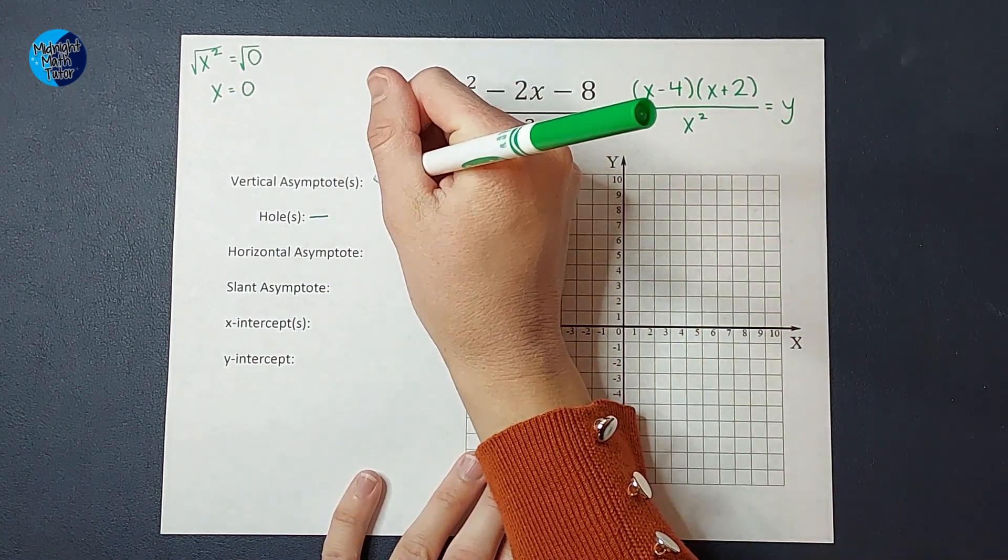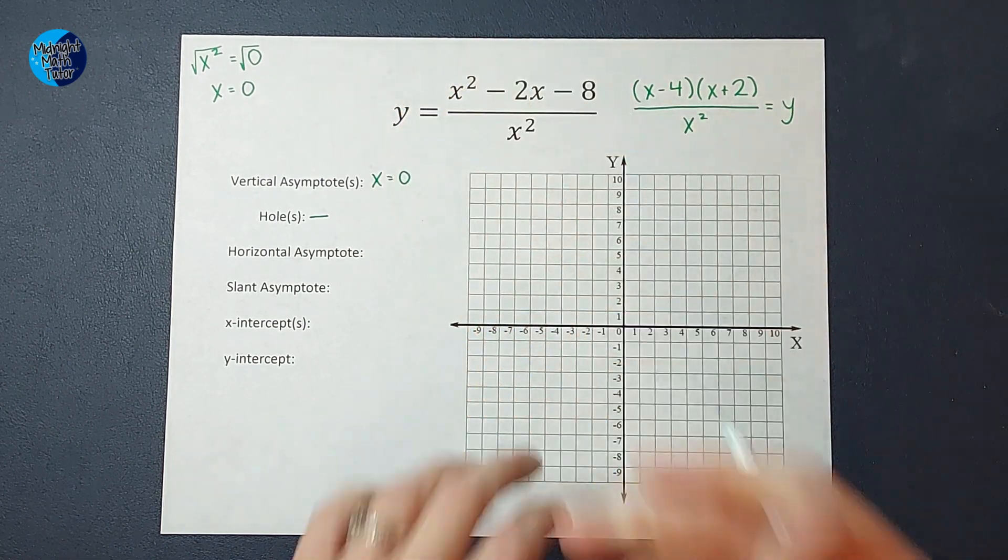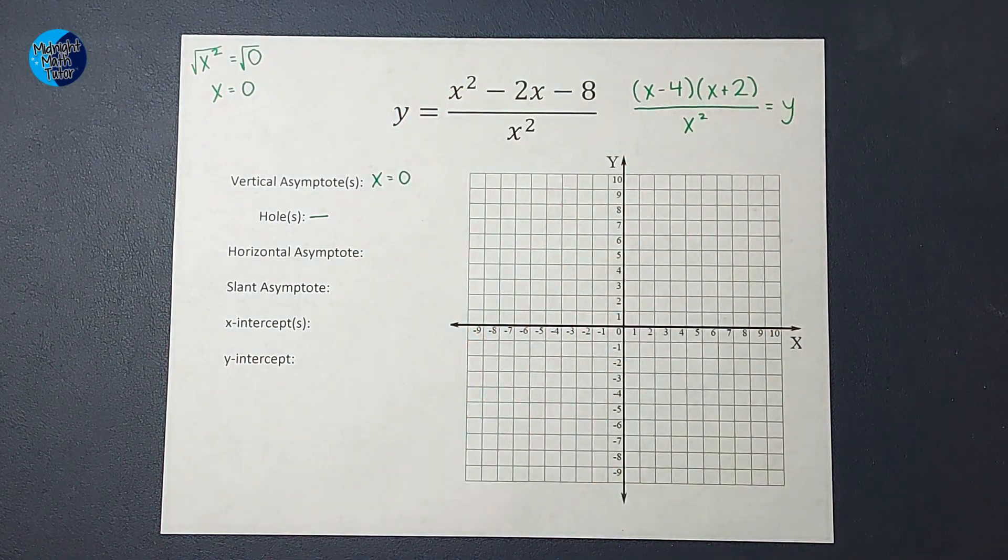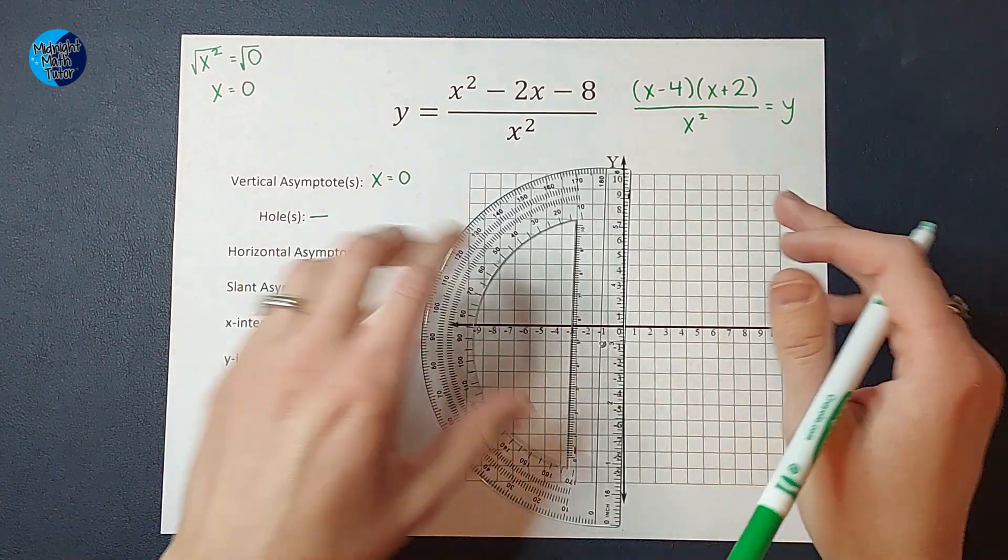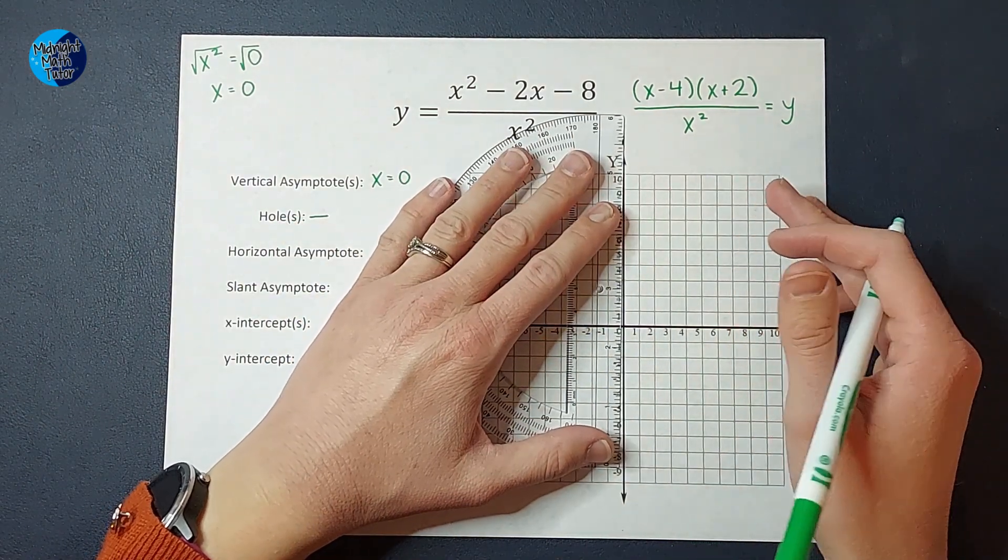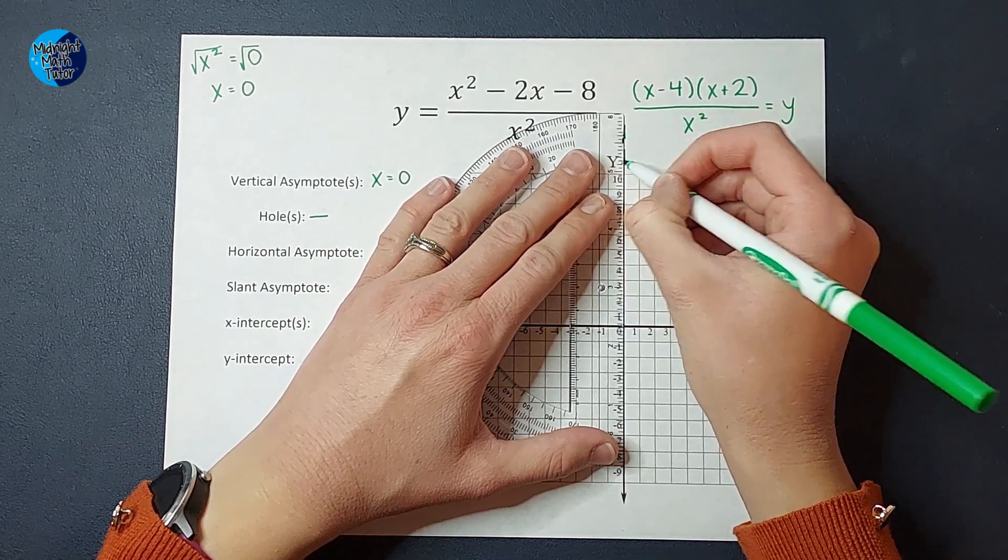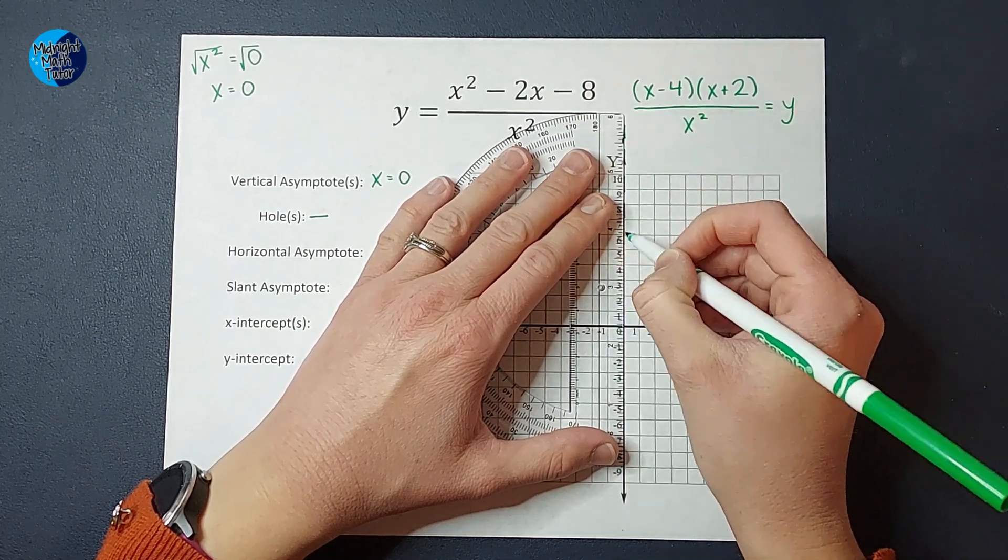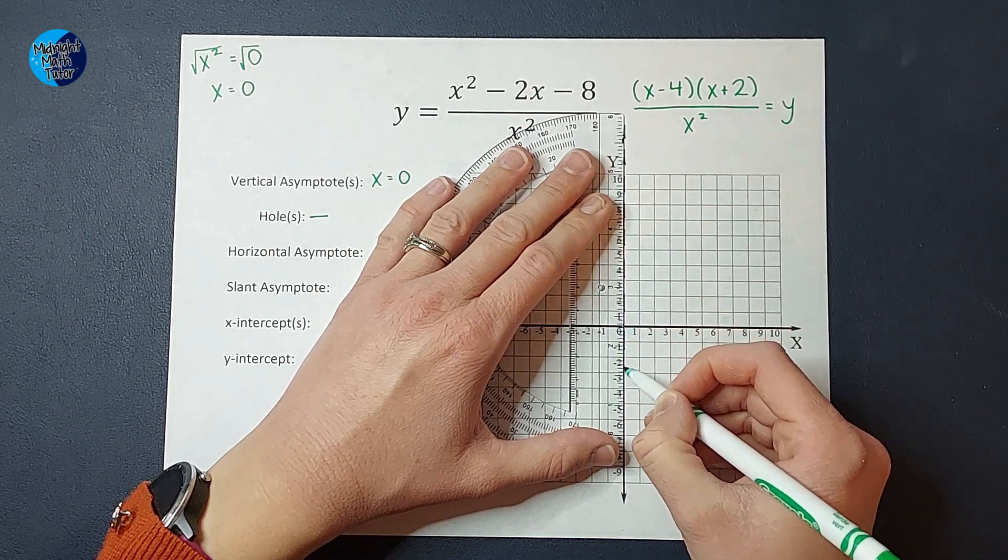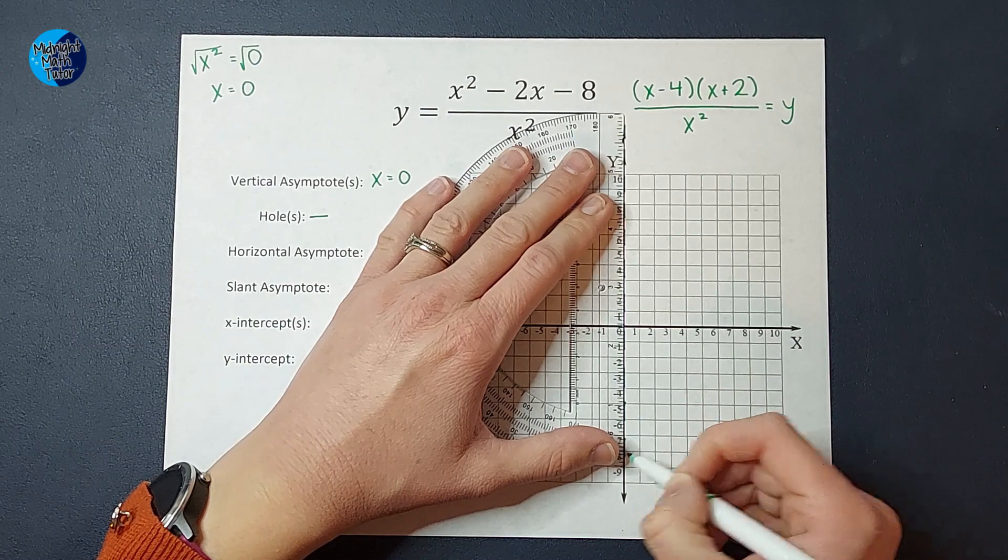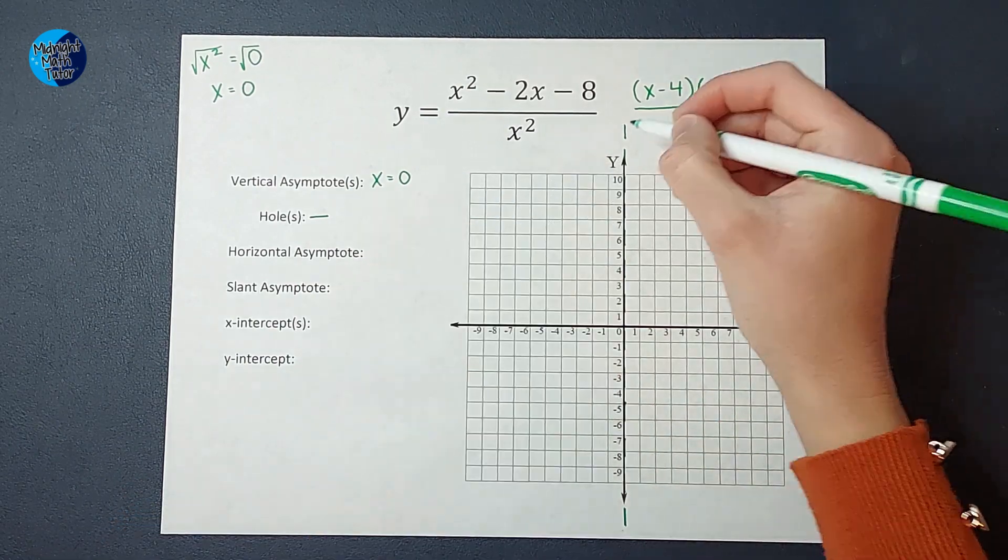So my vertical asymptote is at x equals zero. And we represent that on our graph with a dotted line. If I can find my straight edge, here we go, with a dotted line. Now obviously this might be kind of hard to see when it's right on the y-axis, but we'll try to make it so you can see it. So my graph will not cross the y-axis in this particular graph. There we go.